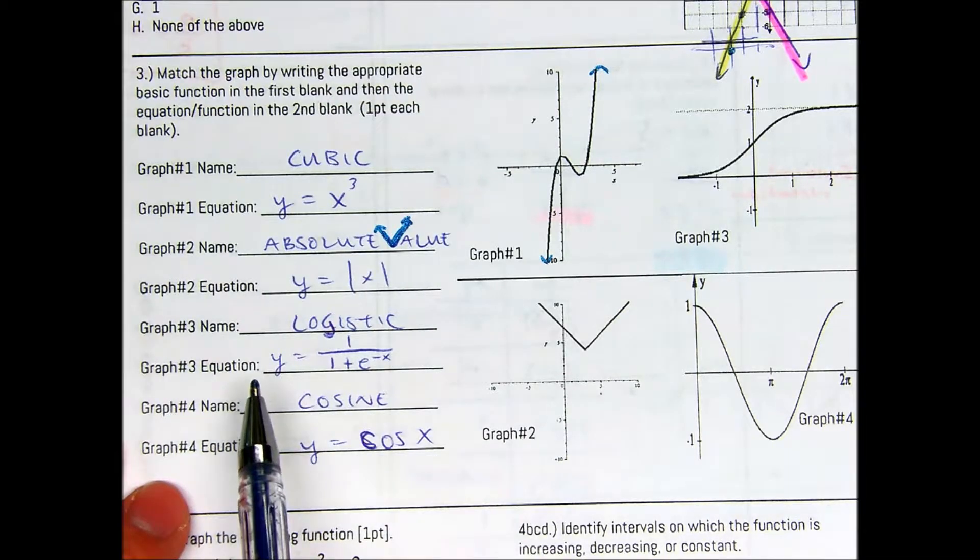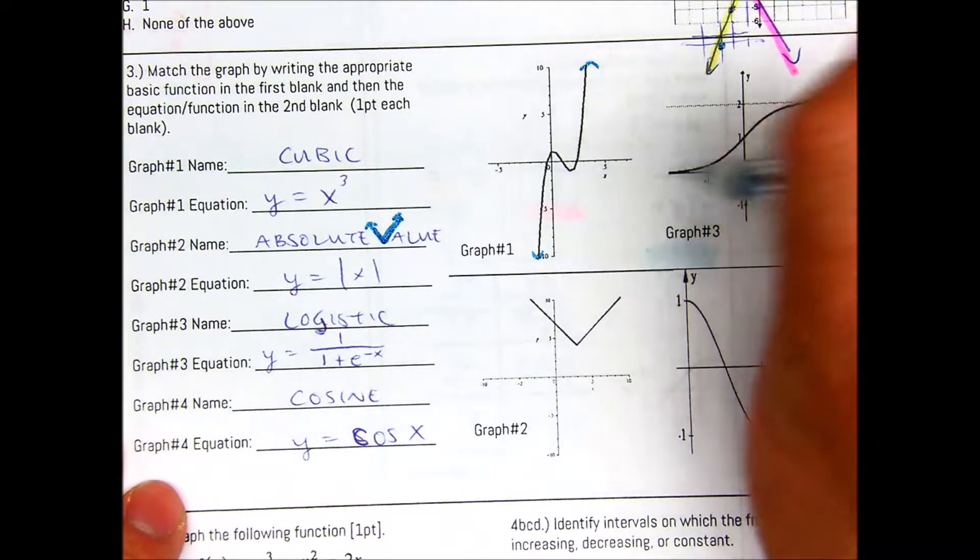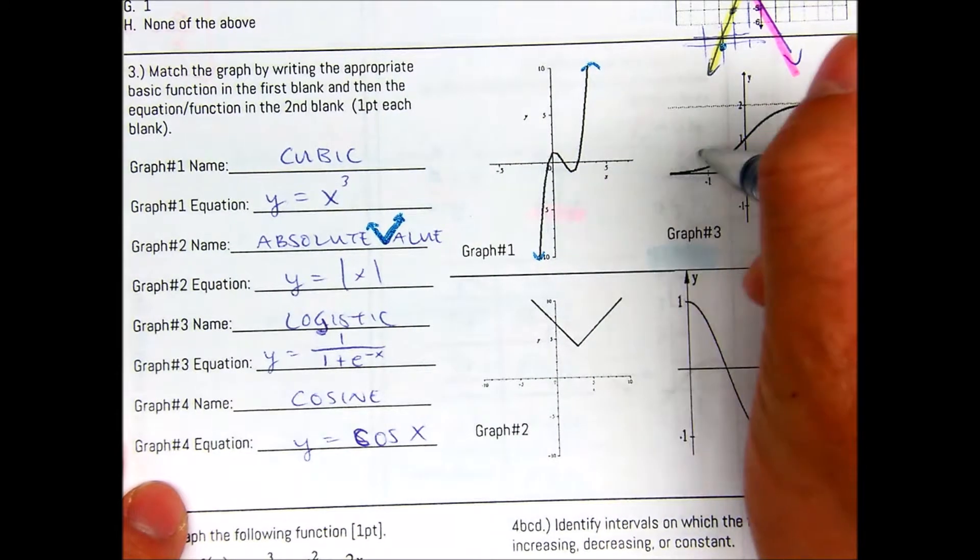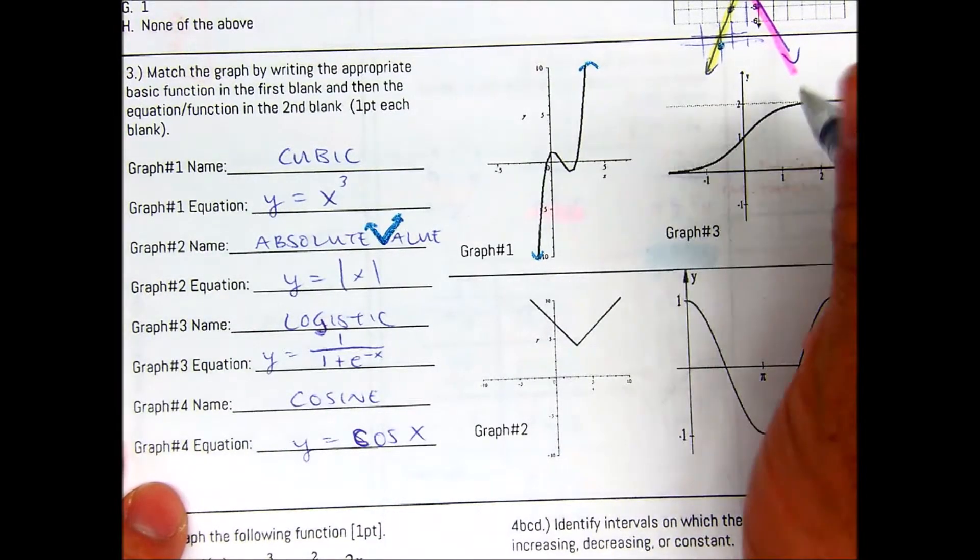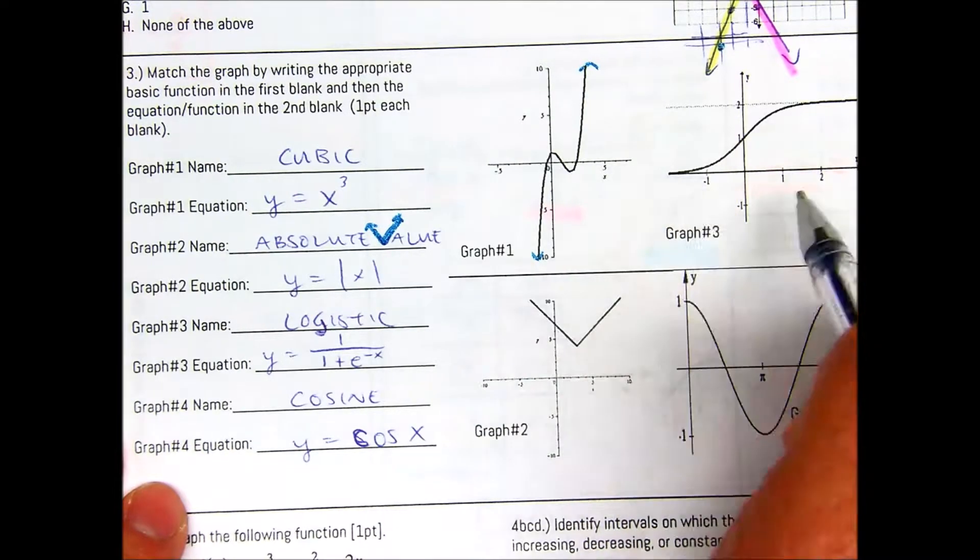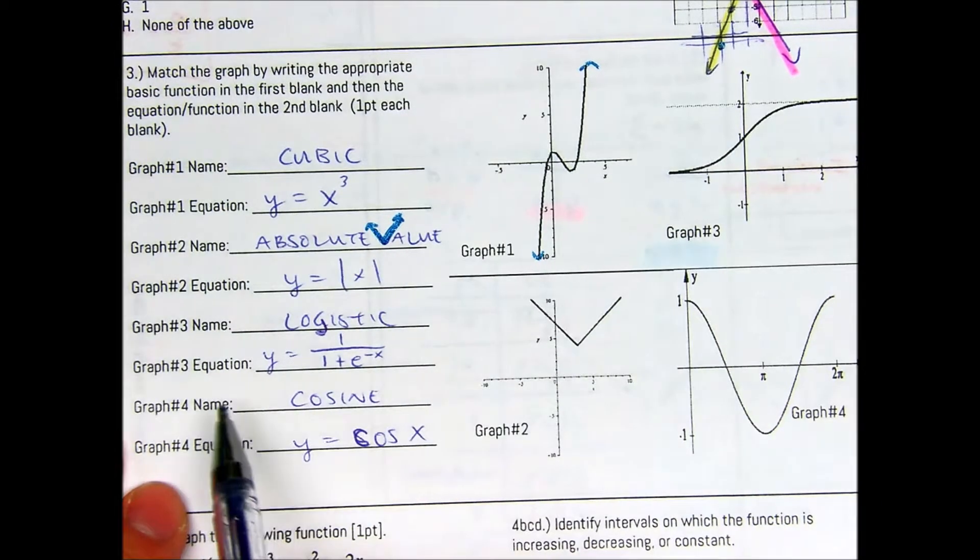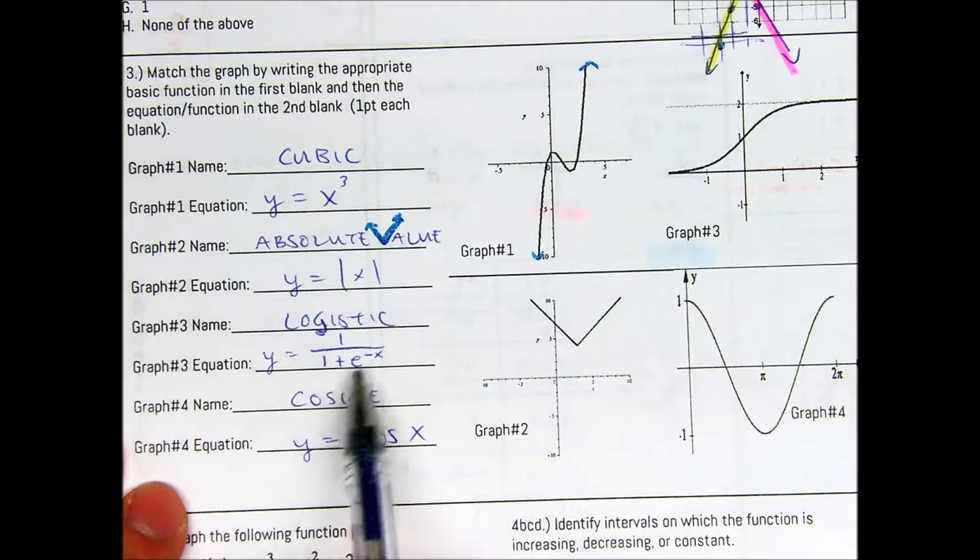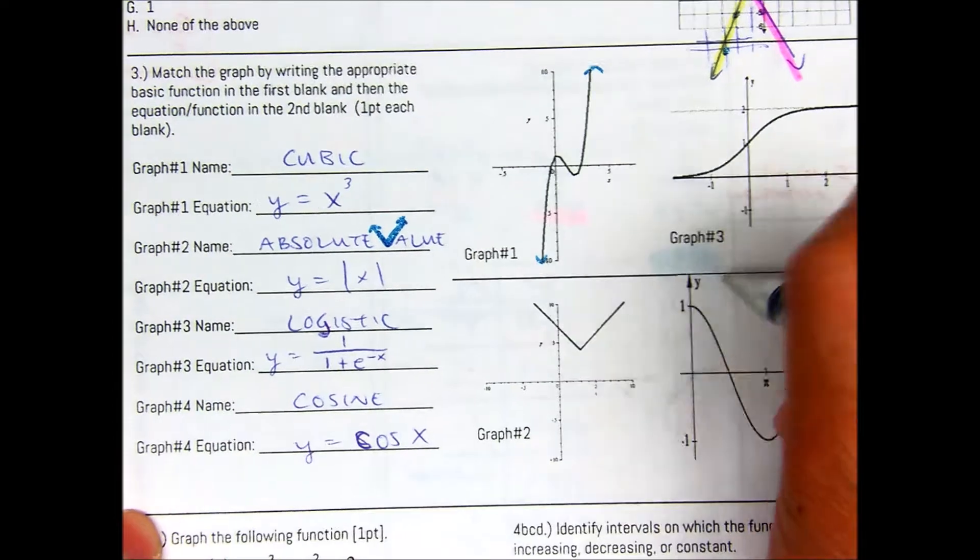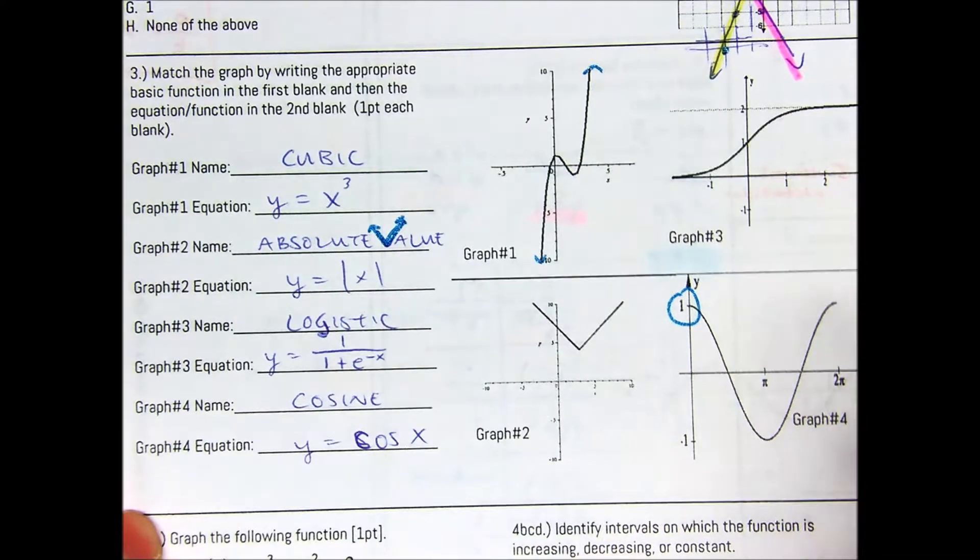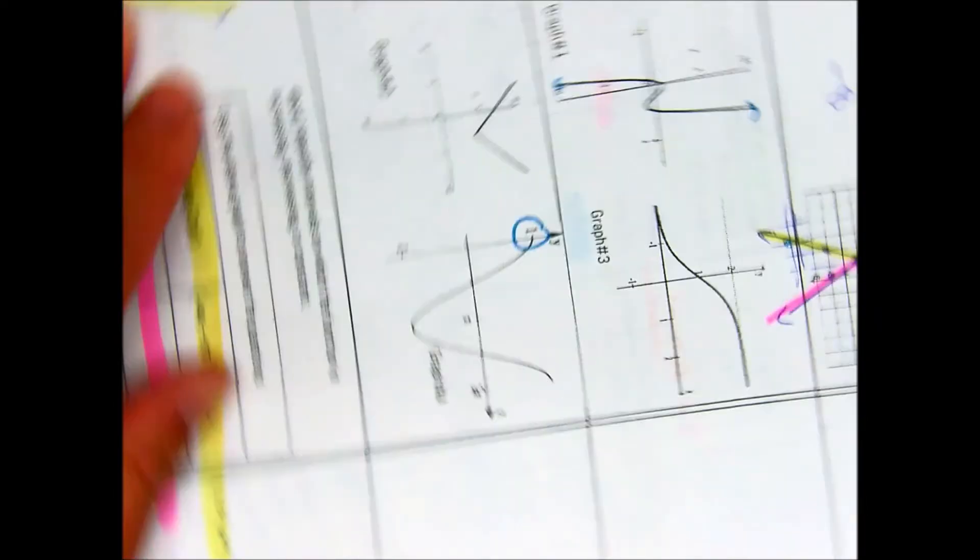Graph number three is a logistics function. You know it's a logistics because it kind of looks like a sideways cubic. You can even argue it kind of looks like a cosine, but it flattens out. So it has restrictions on the range. That might be helpful to recognize that it's basically a bounded function. Your equation is y equals one over one plus e to the negative x. Graph number four is cosine. How do you know it is cosine? Cosine starts at one and finishes at one. The equation is y equals cosine x. If you always turn the paper sideways, it kind of looks like a C for cosine.